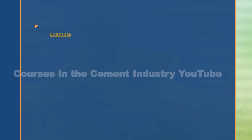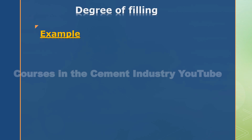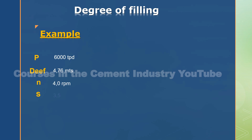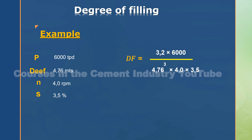Example for degree of filling formula: where P equals 6000, DEF equals 4.76, N equals 4 RPM, S equals 3.5%. DF equals degree of filling formula result.